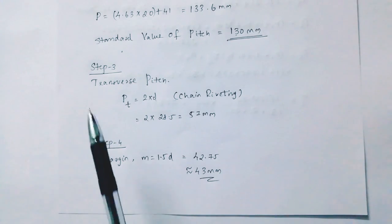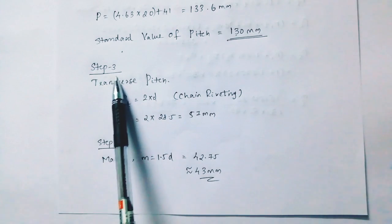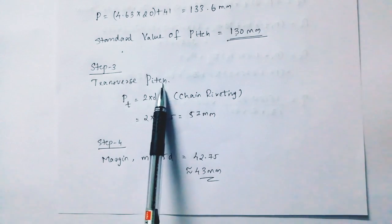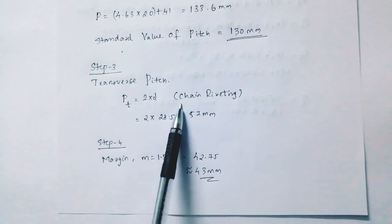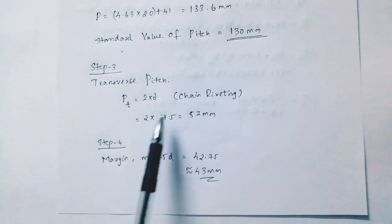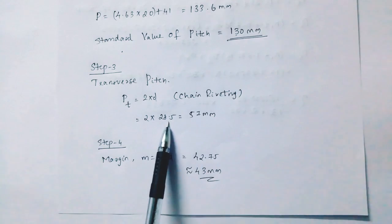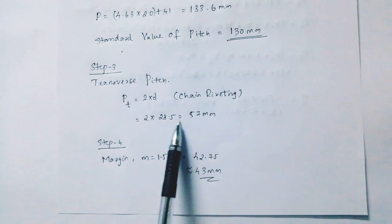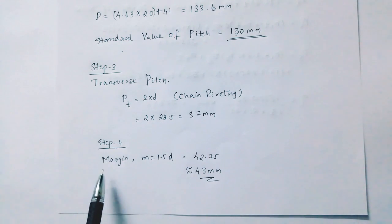Step 3 is transverse pitch. The transverse pitch means pt equals 2 into d for chain riveting, which equals 2 into 28.5 equals 57 mm.